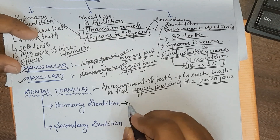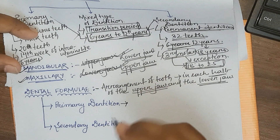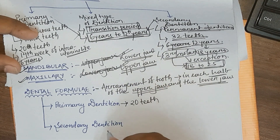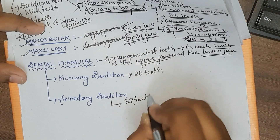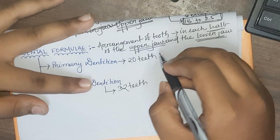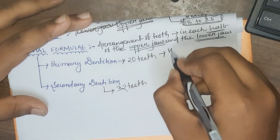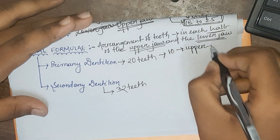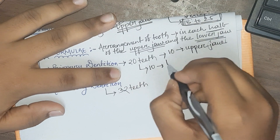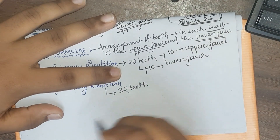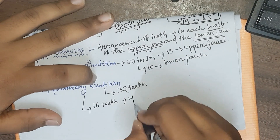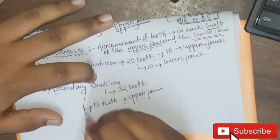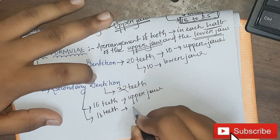In primary dentition, in the upper arch and lower arch combined, there are 20 teeth total. In secondary dentition, in both the upper jaw and lower jaw, there are 32 teeth total. In primary dentition, there are 10 teeth in the upper jaw and 10 in the lower jaw. In secondary dentition, there are 16 teeth in the upper jaw and 16 in the lower jaw.